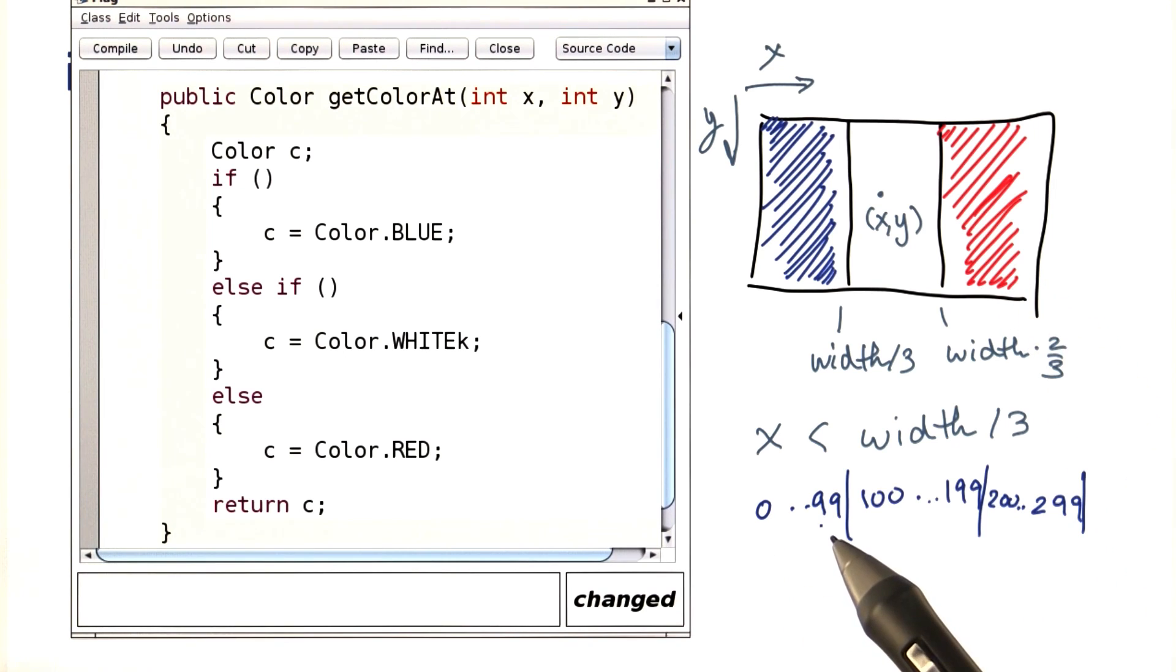So, the last value that stays in this branch here should be x equals 99. Width is 300. Width over 3 is 100. So, the less than is correct. We want to be less than 100 to stay here. As soon as we're between 100 and less than 2 thirds of the width, we want to be in the middle branch.